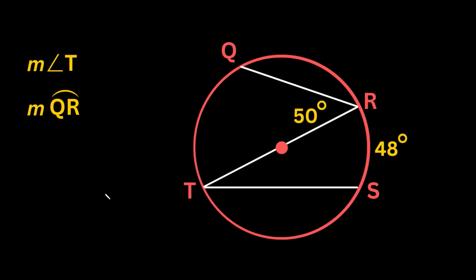This is the first example we're going to go over. We have a circle with some white lines — they're just chords — and the two things we want to find in this circle are the measure of angle T and the measure of arc QR.